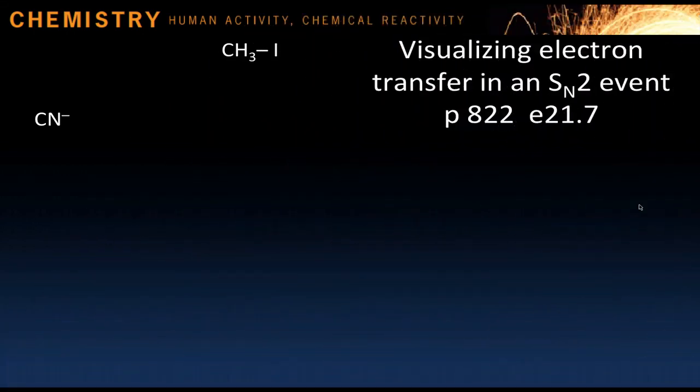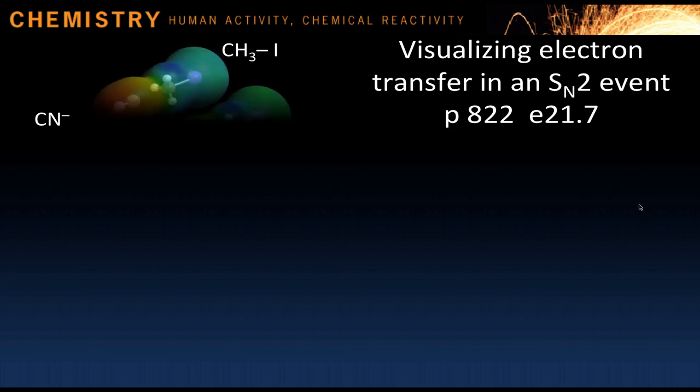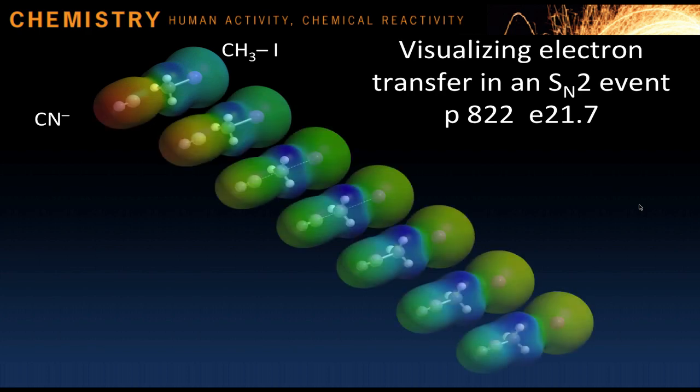Electrostatic potential maps can also visualize the movement of electron density during bond-making and bond-breaking in the formation of an intermediate or a product molecule. The example shown here is taken from chapter 21, where we cover SN2 reaction mechanisms. Here, the electron-rich red cyanide ion forms a bond to a methyl group, breaking the carbon-iodine bond in the process. You can see the gradual drift of electron density through the molecule.